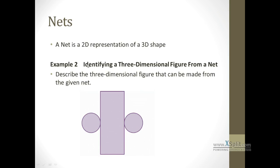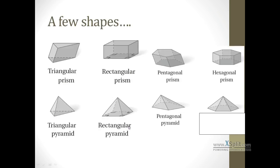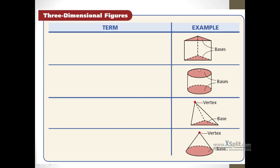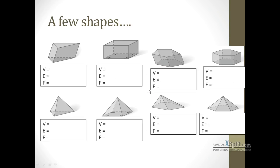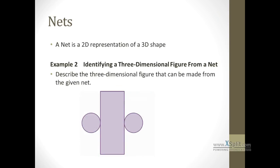A net. A net is going to be a two-dimensional representation of a 3D shape. Essentially, it's what happens when you unfold a 3D shape. Looking at this one here, we have a rectangular lateral face and two bases that are circles. So going back to our definitions here, two bases that are circles, rounded rectangular face. It's going to be a cylinder. So we'd say that this net right here, three-dimensional figure, it's going to be a cylinder.